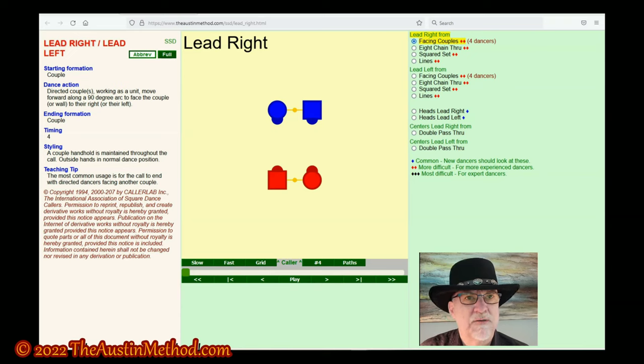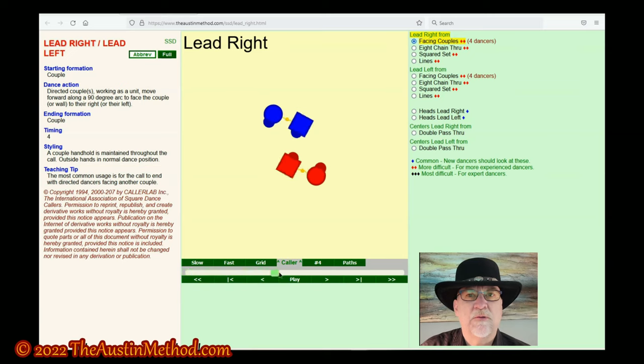Any couple of dancers can lead right or left. Working as a unit, a couple, you move forward 90 degrees in an arc to face the wall to either your right or your left. It's pretty straightforward.